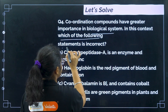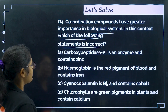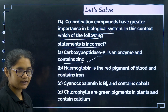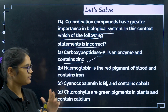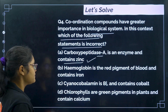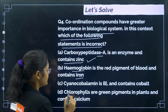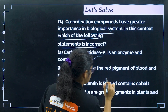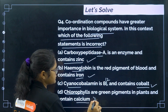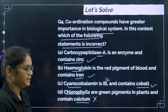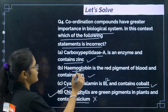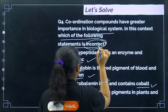Question: coordination compounds have great importance in biological systems — which statement is incorrect? Carboxypeptidase A is an enzyme containing zinc (correct). Hemoglobin contains iron (correct). Cyanocobalamin is vitamin B12 containing cobalt (correct). Chlorophyll contains calcium — this is wrong because chlorophyll contains magnesium. The correct answer is option D.